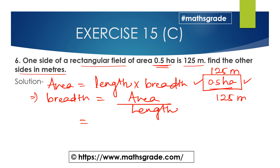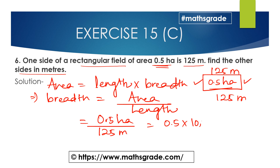Area is 0.5 hectares divided by length of 125 metres. Since area is in hectares and length is in metres, we must convert to equal units. So 0.5 hectares becomes 0.5 multiplied by 10,000 square metres, divided by 125 metres.